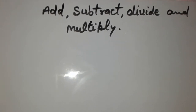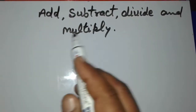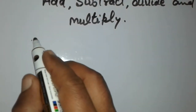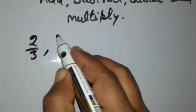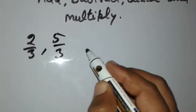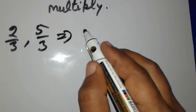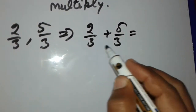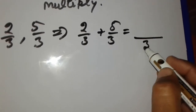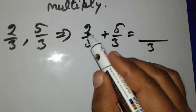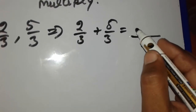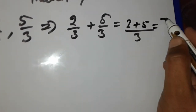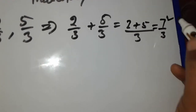Now we will learn how to add, subtract, divide, and multiply fractions. First we take two like fractions: 2 upon 3 and 5 upon 3, and we add them. 2 upon 3 plus 5 upon 3 — because their denominators are the same, we keep 3 as denominator and add the numerators: 2 plus 5, that is 7 upon 3.